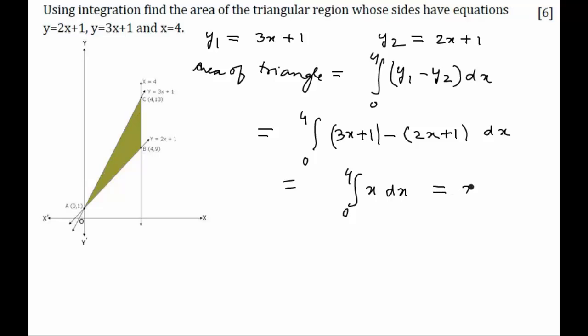The integration of x is x² / 2. Taking out 1/2 as common and evaluating from 0 to 4, this gives us 1/2 × (16 - 0) which equals 8 square units.